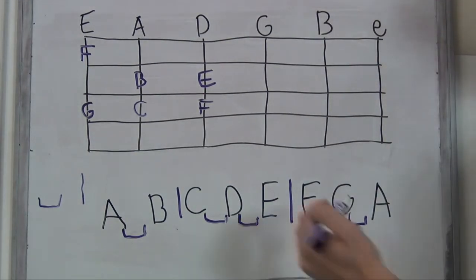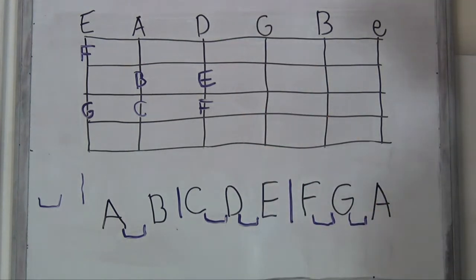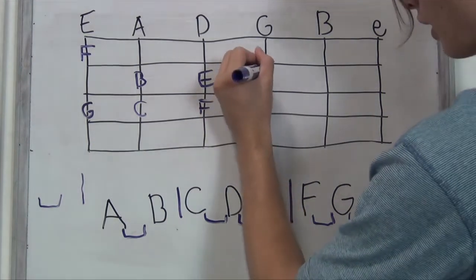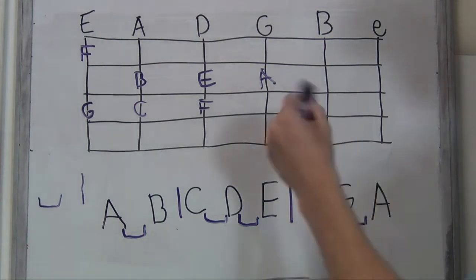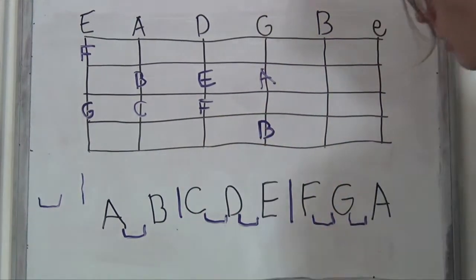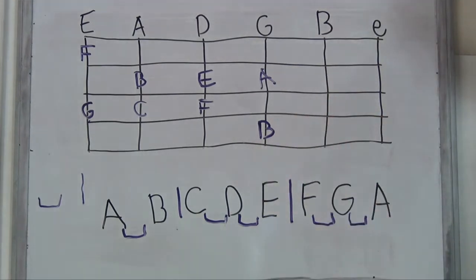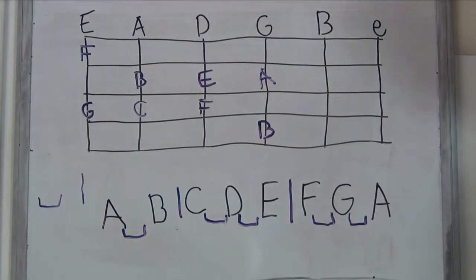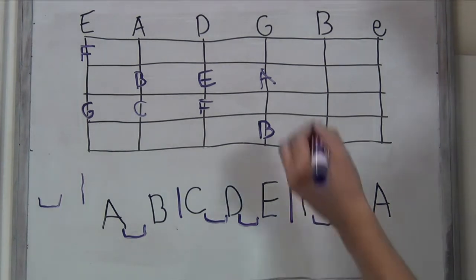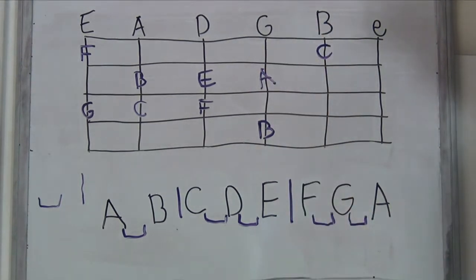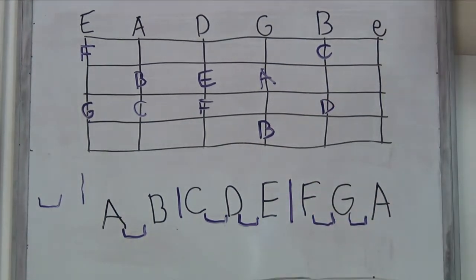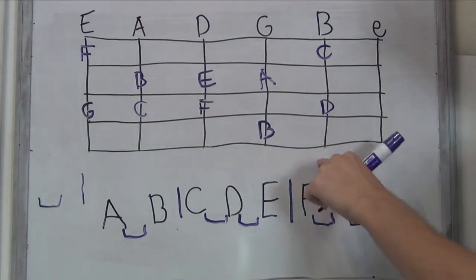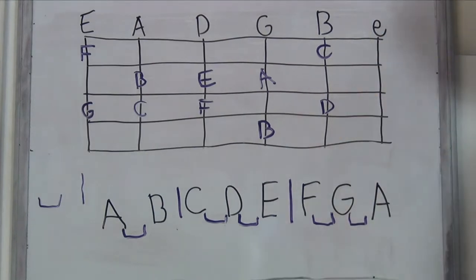F to G is a whole step. You can see that would appear under what we have here, and we've got it open. G to A is a whole step, so we've got that on the second fret. A to B is a whole step — we can put it here. We've also got an open B here, so let's move on from this open B string. B to C is a half step, so it's the very first fret. C to D is a whole step. D to E — we've seen this before — D to E is a whole step. It would land right on our fifth fret, and now we've got an open E string.